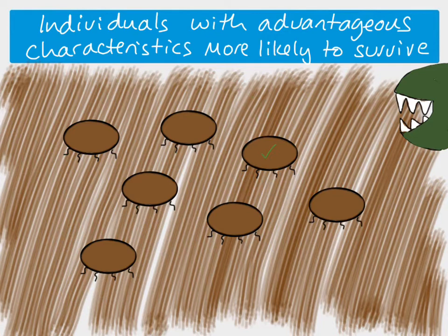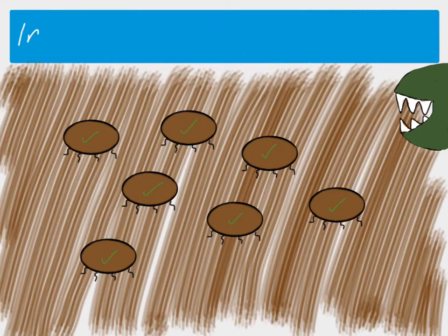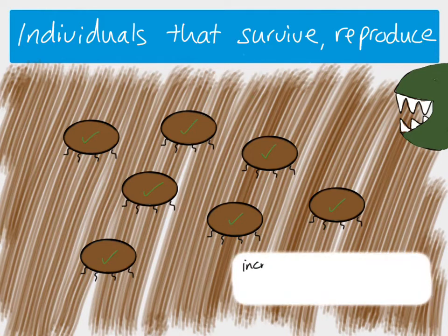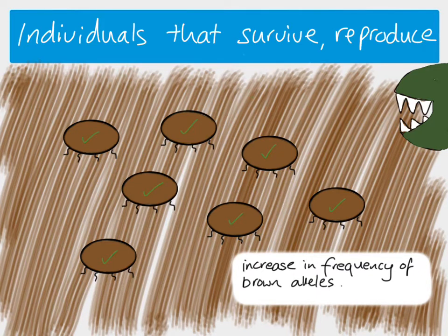Now we've got a population which looks very different from before. Whereas before they were all white apart from one brown individual, we've now got a population which is all brown — all camouflaged, all with the advantageous characteristic. Individuals with the more advantageous characteristics are more likely to survive, reproduce, and pass on their alleles. Over time we see an increase in the frequency of the advantageous alleles in that environment.